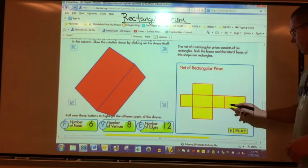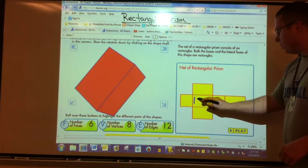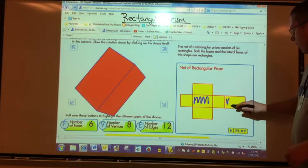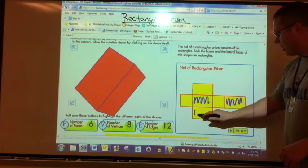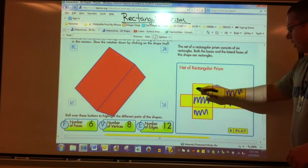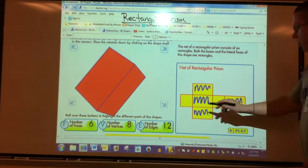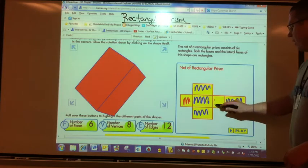So I have a long piece which is the bottom, a long piece which is the top, a similar long piece which is the side, and a similar long piece which is the other side. And then my two short pieces would be the front and the back.